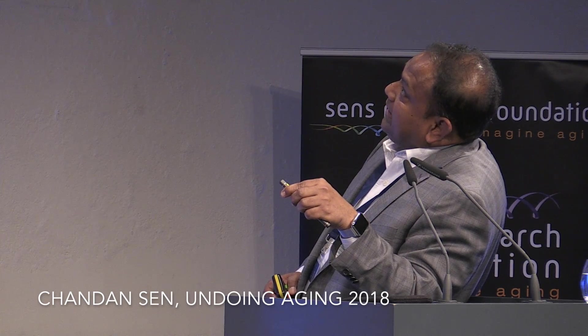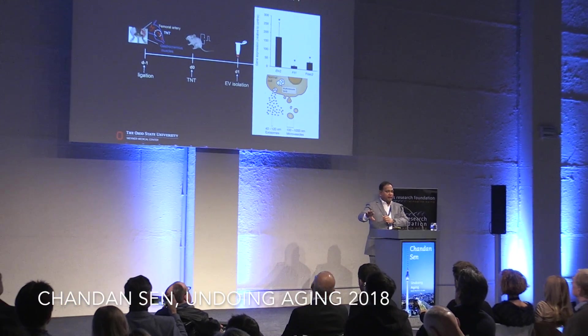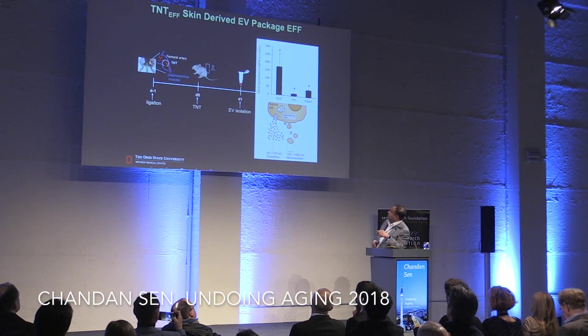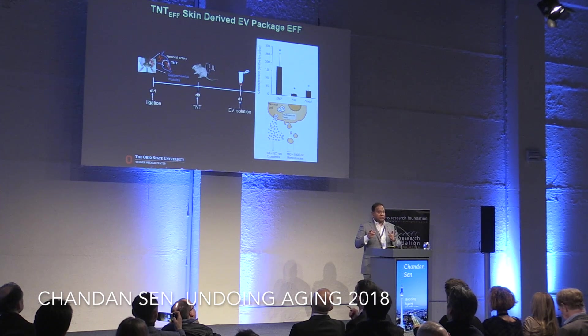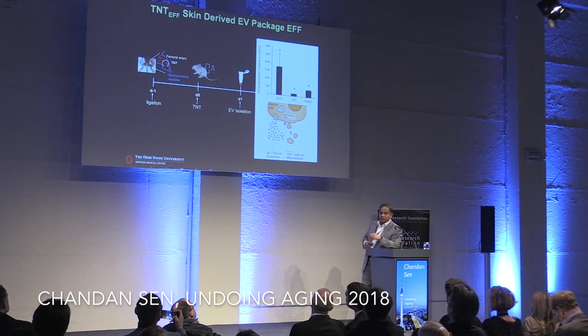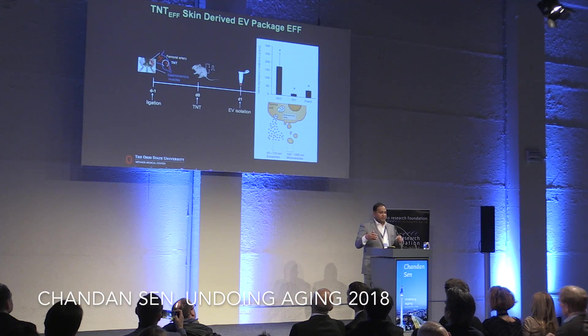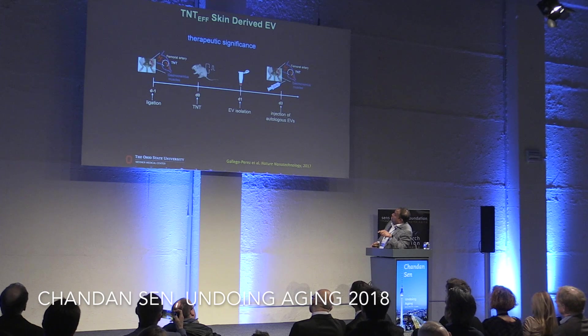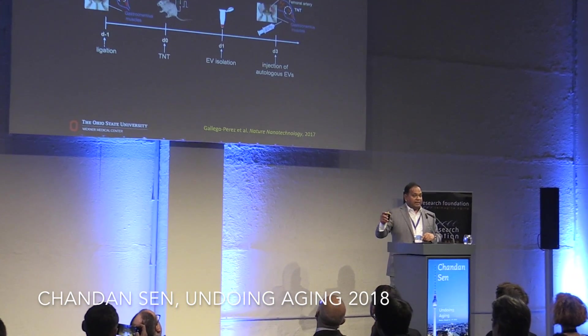When we performed TNT-EFF, the EFF plus a dozen physiological factors got packaged by nature — not by us — into extracellular vesicles originating from the skin. These EVs contained our EFF along with other physiological factors whose criteria we don't fully know. They were dispatched into the blood, and those EFF-rich EVs homed to ischemic tissue and perpetuated the vasculogenesis process.